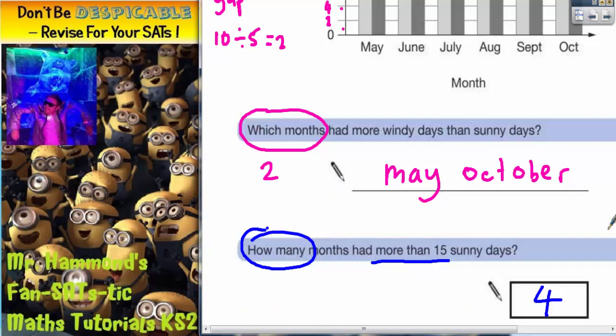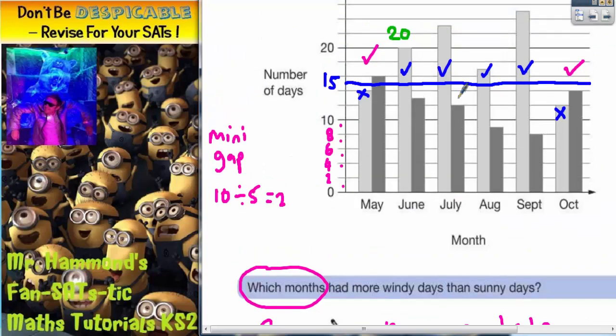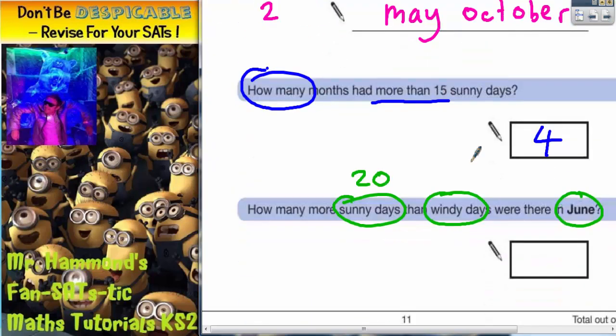Windy days is the dark grey bar. Now windy days is level with this bit here. Now we need to know what this is. So remember we said earlier on that we're going up in two. So it's 2, 4, 6, 8, 10. This would be 12, 14. There we've got 15, 16. So actually the dark grey bar for June would be between 12 and 14 which would be 13. So windy days in June is 13.